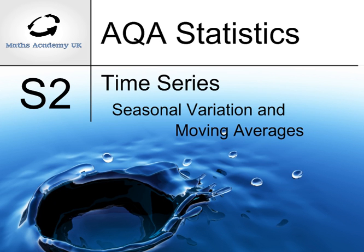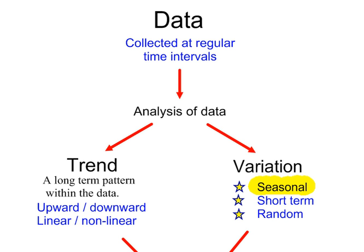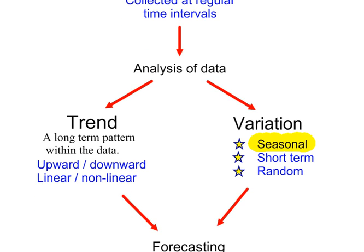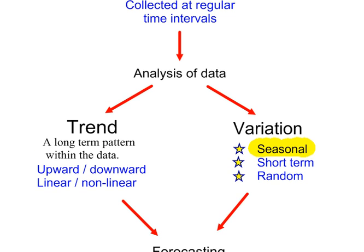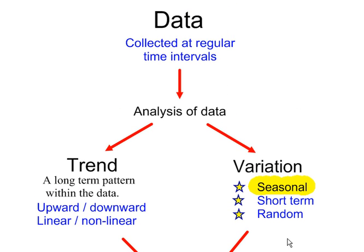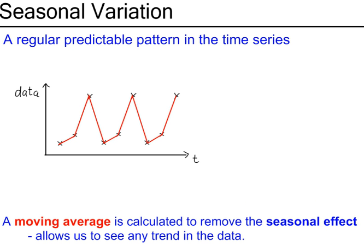Time Series: Seasonal Variation and Moving Averages. The two key components of a time series are Trend and Variation, both of which can be used to obtain a forecast. In this video, we focus on Seasonal Variation and Moving Averages. Seasonal Variation is a regular, predictable pattern in the time series.